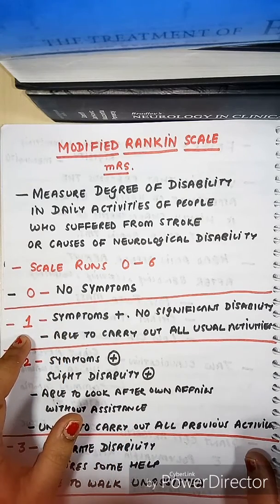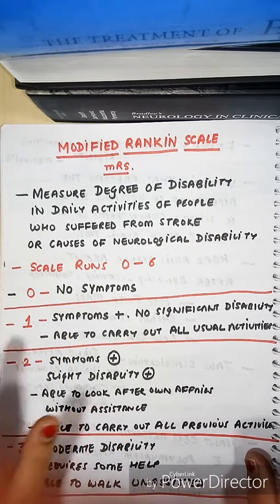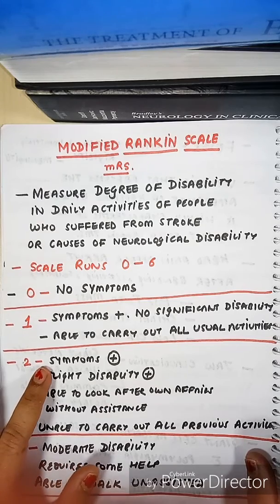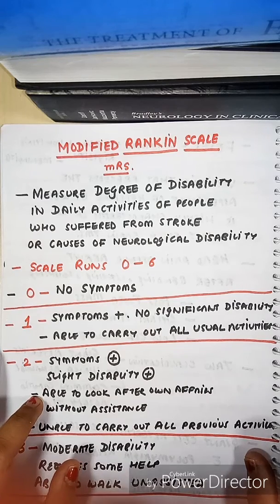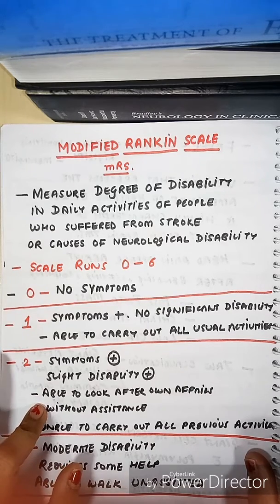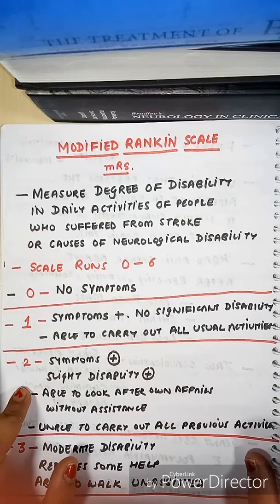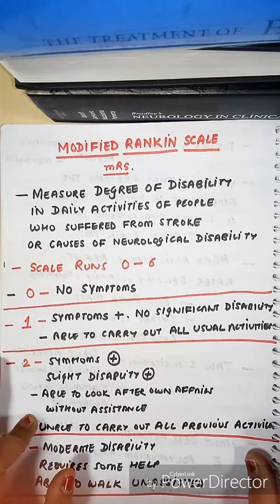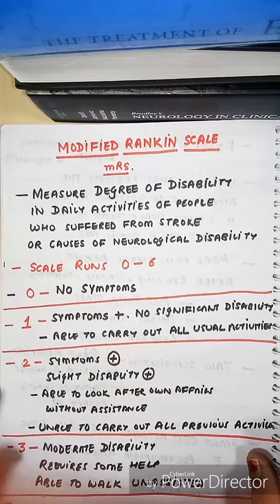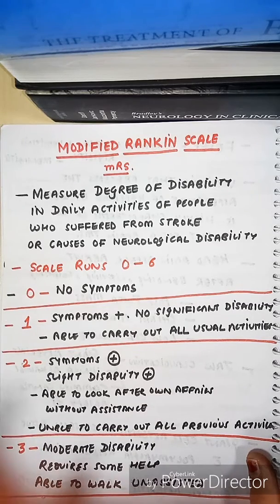Grade 1: patient has some symptoms. Grade 2: patient has some symptoms and slight disability, but he is able to look after his own affairs without assistance. In grade 2, he does not need any assistance but he is unable to carry out all previous activities.